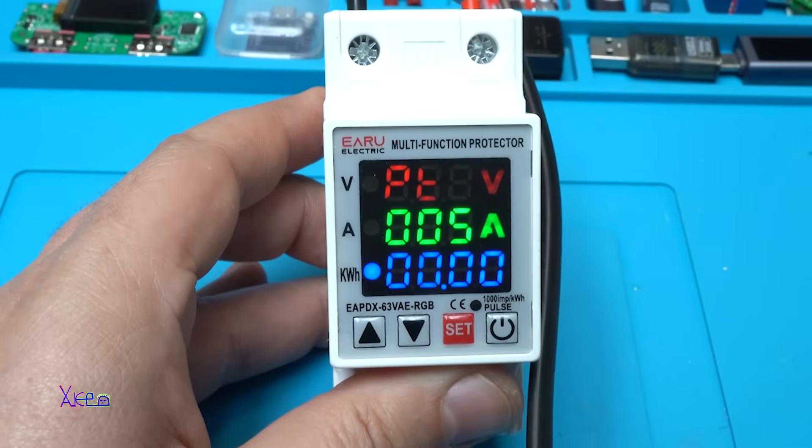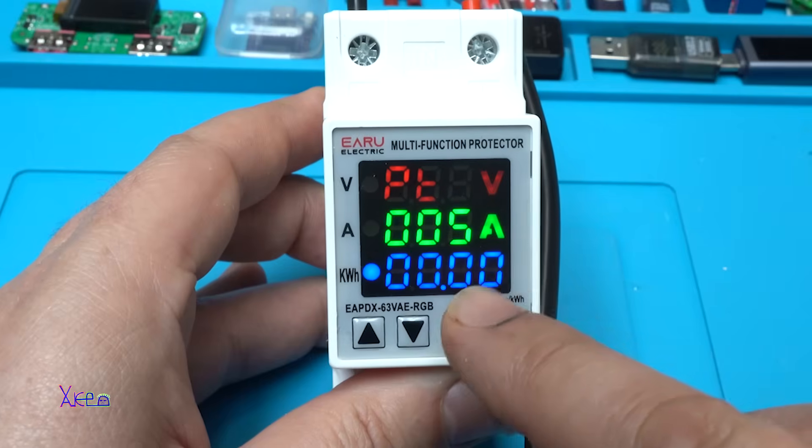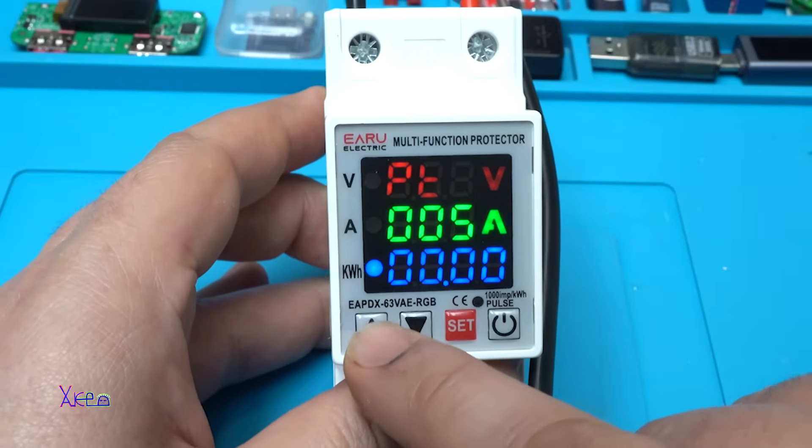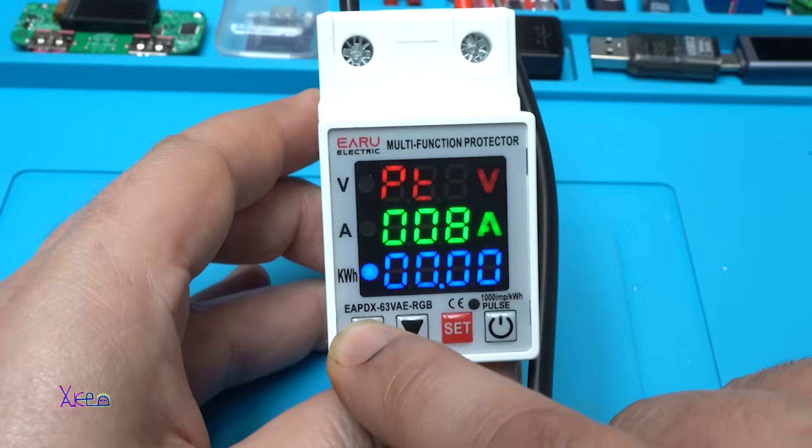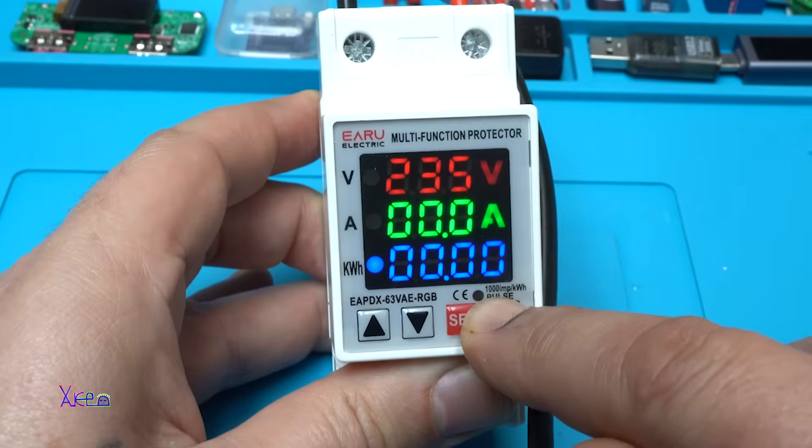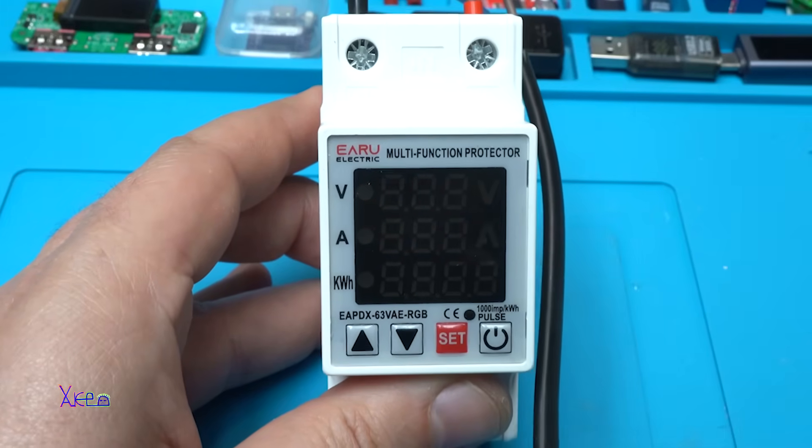PT means power on delay time. That means that you can set the time when the module will be turned on. Let's say five seconds. I'm going to change it to eight seconds. Hit one more time. Or holding the power button and go back. Turning off the module.